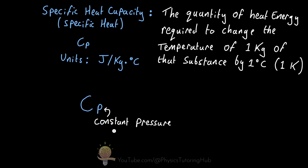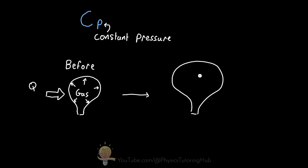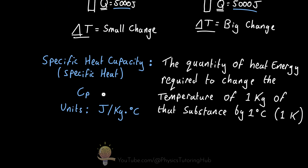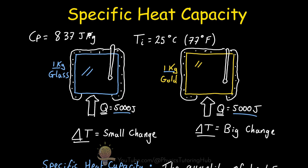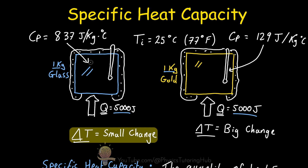What does constant pressure mean? It means that the substance — whether it's a gas, liquid, or solid — is allowed to expand or shrink in volume as it's heated or cooled, and the pressure of the substance remains constant. For example, when we add heat energy to a gas in a balloon, so long as we allow the gas to expand as it's heated, the pressure of the gas will remain the same. Specific heat has units of joules per kilogram per degree Celsius. Glass has a specific heat of 837 joules per kilogram per degree Celsius, and gold has a specific heat of 129 joules per kilogram per degree Celsius. The higher this specific heat, the more heat energy transfer is required per kilogram to change the temperature by one degree Celsius.